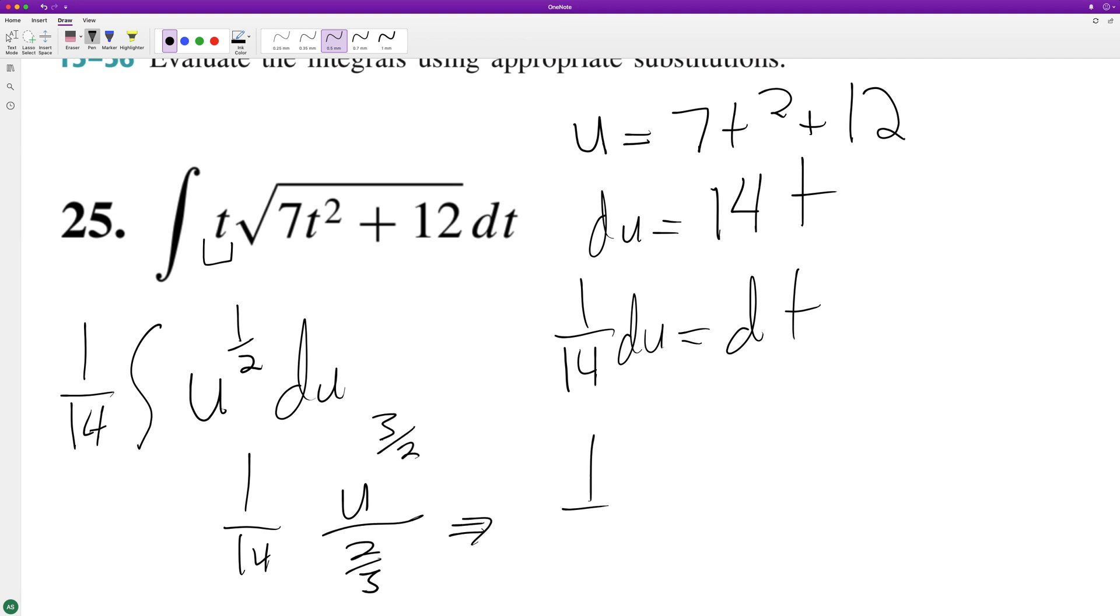So we get one over 14 times. And when you divide by that, it's the same as multiplying by the reciprocal. Three over 28.